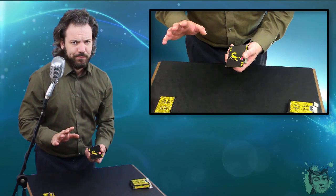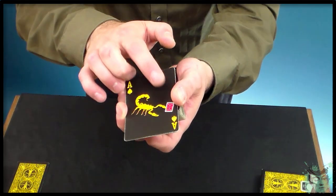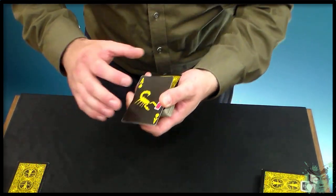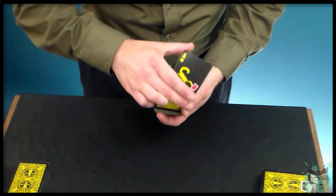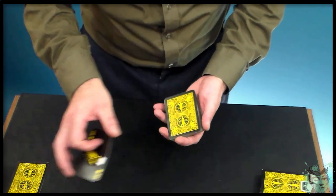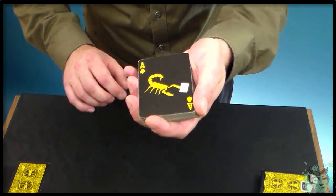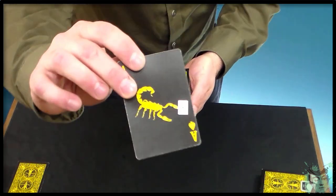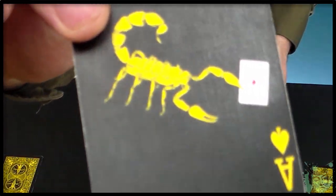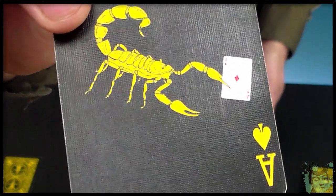Anyways, never mind. Take a look. The scorpion is holding a card in its claws, and if I give the scorpion a little shake, the scorpion reveals the card it's holding. Take a look now. The scorpion is holding an ace of diamonds. Can you see that? It's crazy.